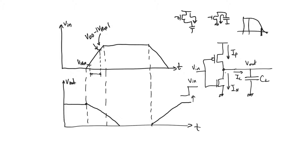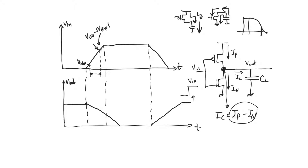Why is this a problem? We always assumed that the current flowing into the capacitor, I_C, is equal to either I_N or I_P alone. When discharging, I_C equals I_N fully; when charging, I_C equals I_P fully. But now, applying KCL with both NMOS and PMOS on, we find that I_C equals I_P minus I_N. Therefore, because both are on at the same time, this decreases the net current available to charge or discharge the capacitance.